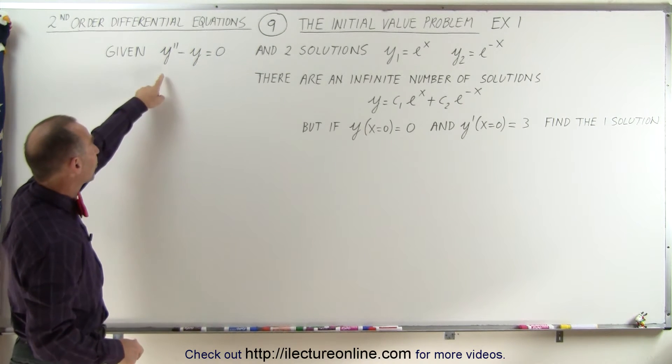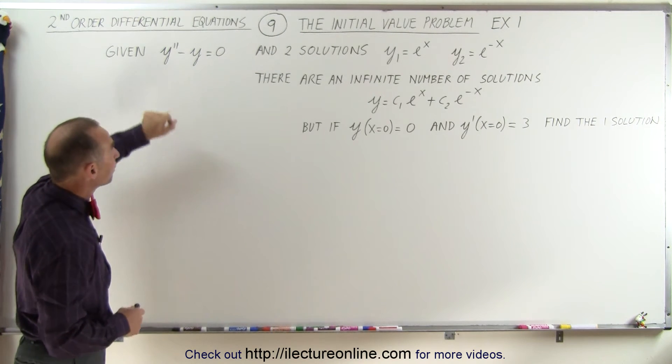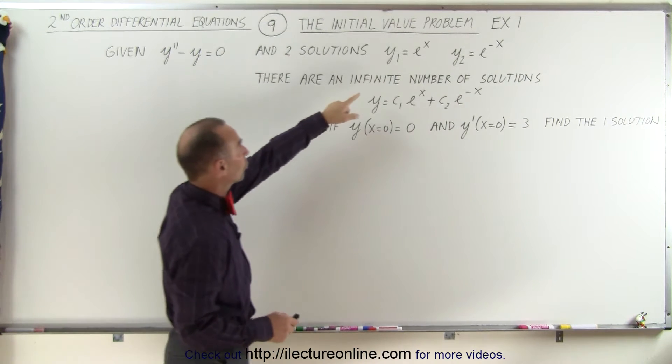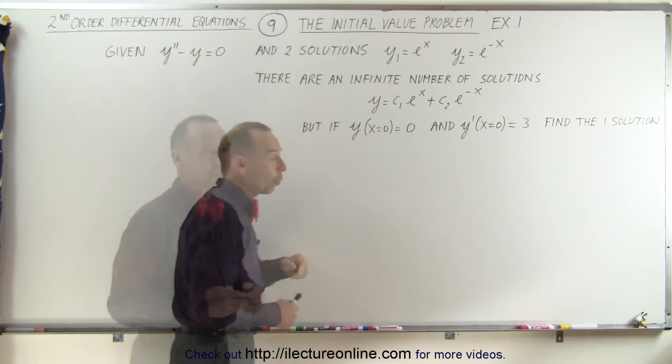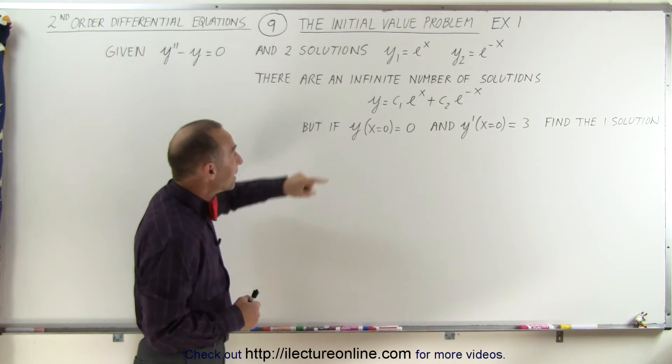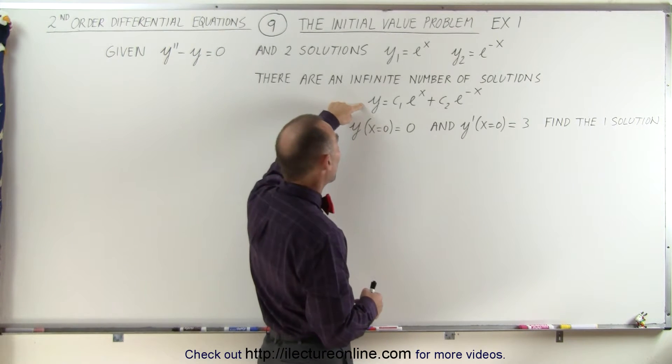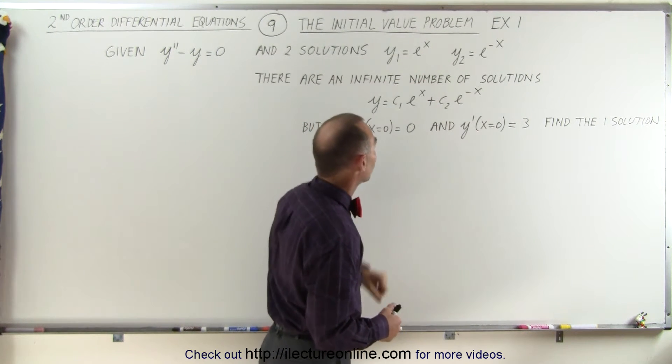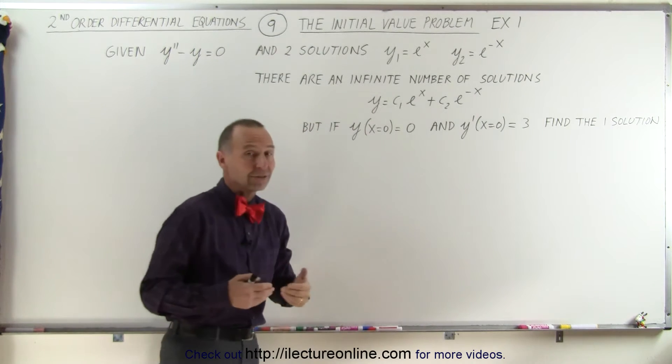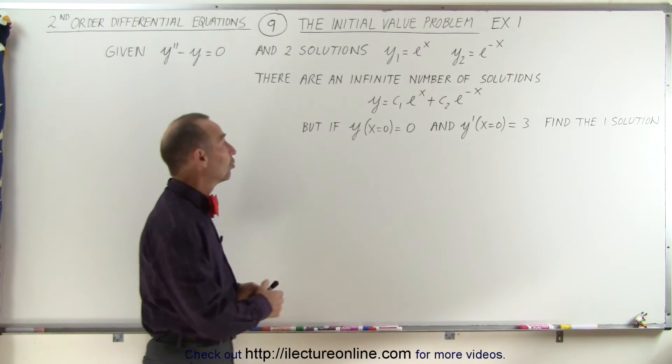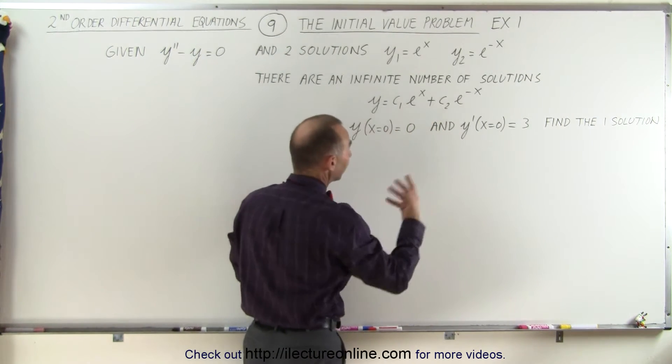Here we have a second-order homogeneous differential equation, and it has two solutions, y1 and y2. Of course, we can then set up the general solution, where y is equal to a linear combination of the two solutions, but that would mean that there would be an infinite number of solutions where c1 and c2 can take on any value.